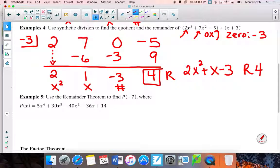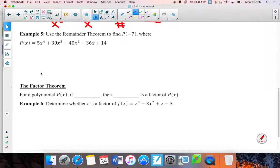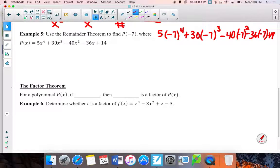So one nice thing is there's a thing called the remainder theorem. So on example number 5, use the remainder theorem to find p of negative 7. Now you are more than welcome to just go 5 times negative 7 to the 4th plus 30 times negative 7 cubed, 40 negative 7 squared, 36 negative 7 plus 14. But holy cow, I'm running out of room. And that's a lot to figure out. So there's another way you can do it, and it's with synthetic division.